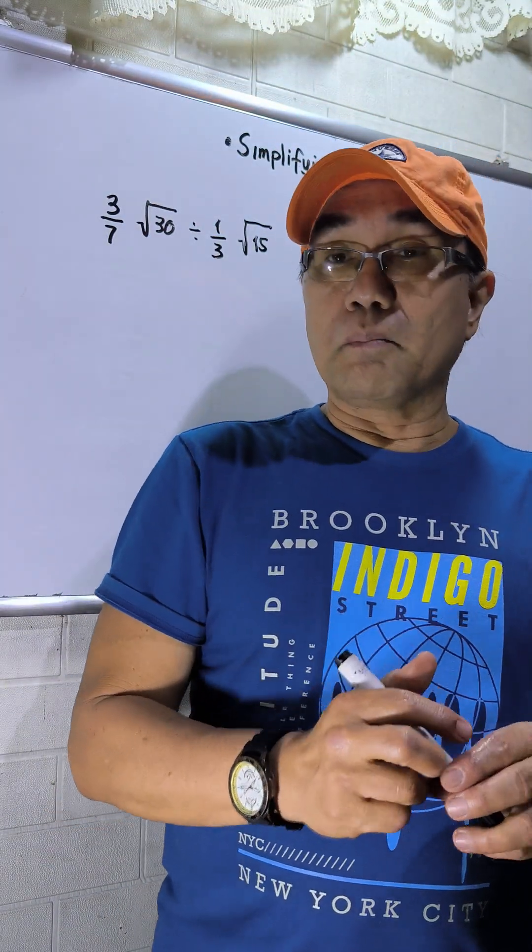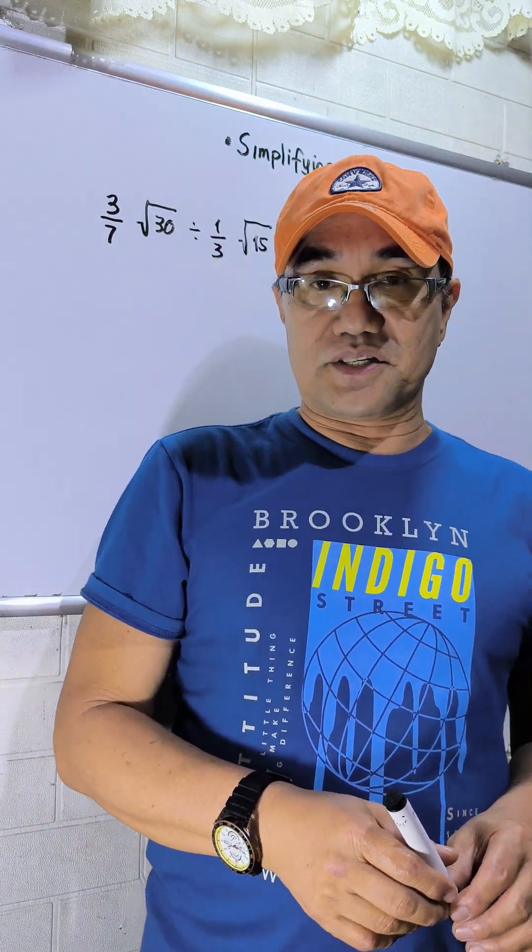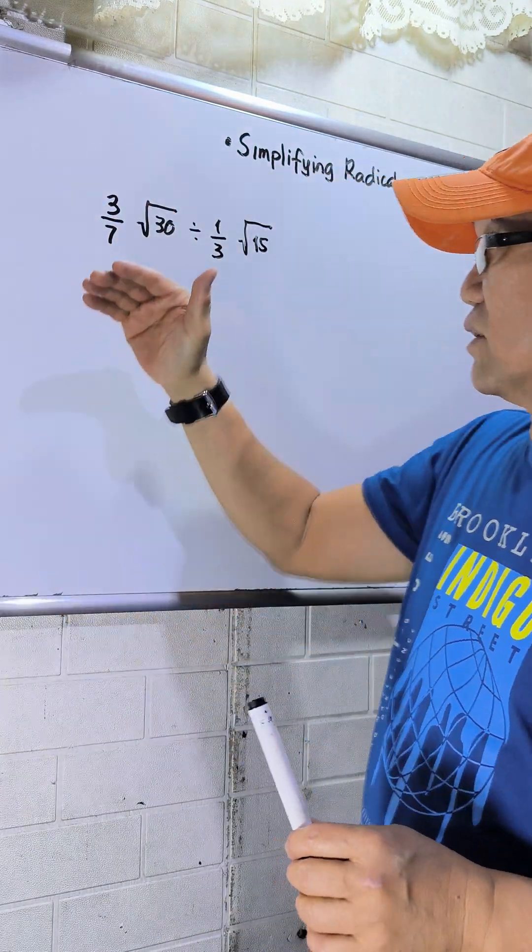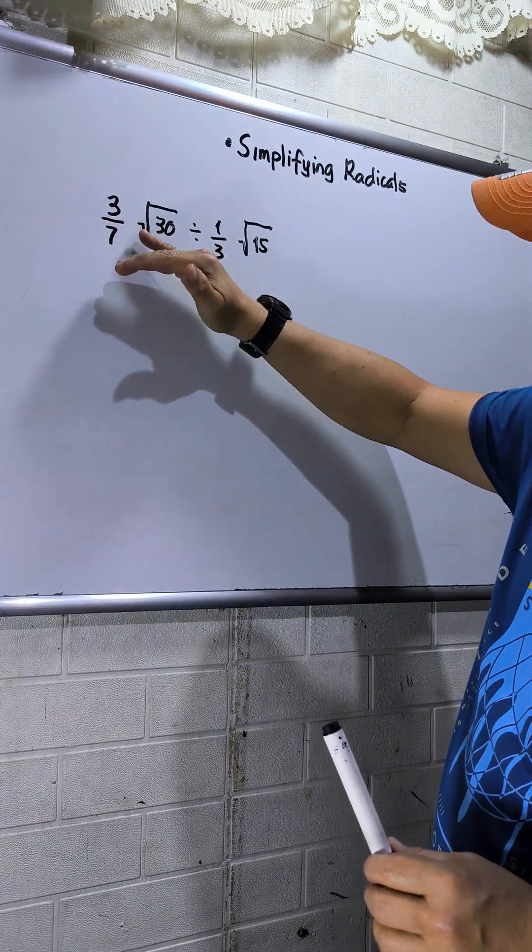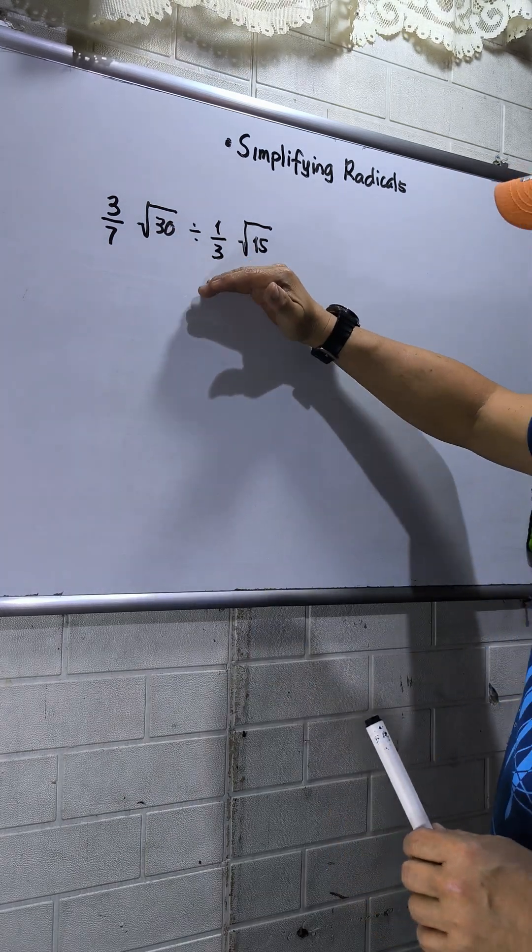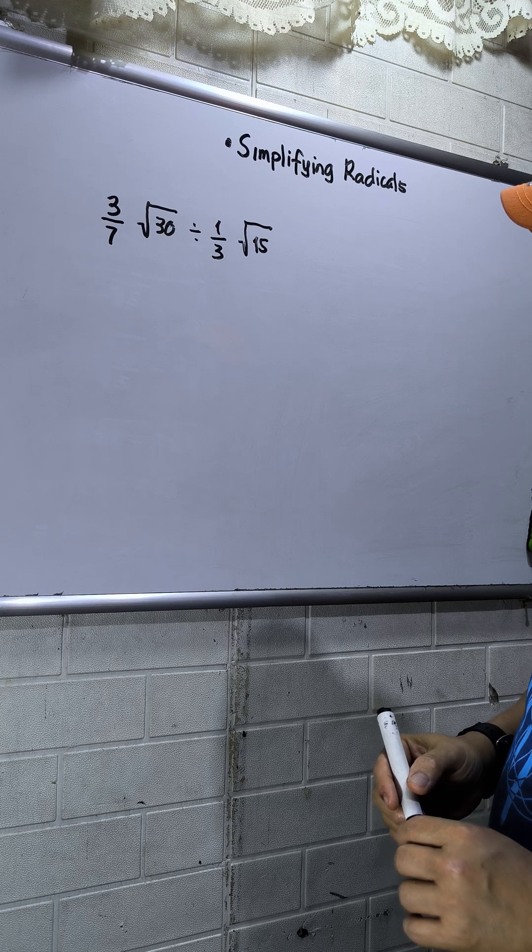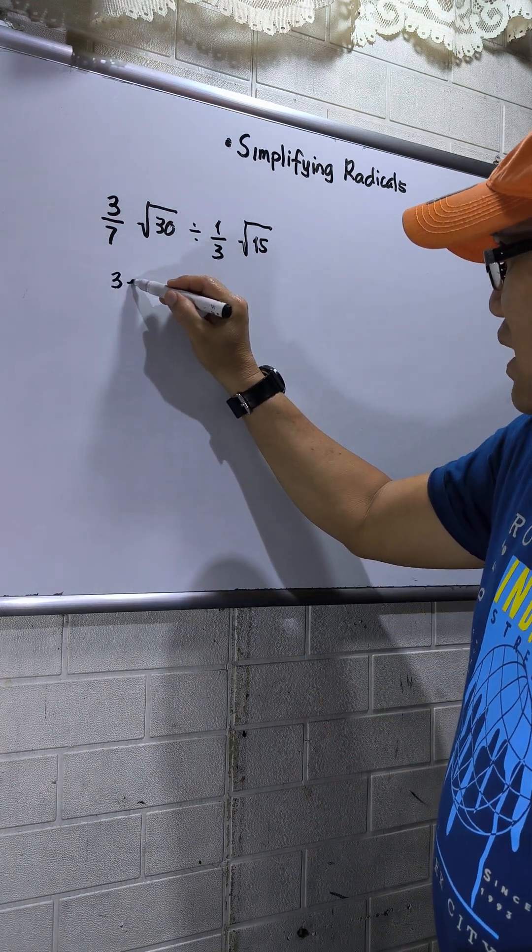Hello to everyone, my topic today is about simplifying the radicals. So I have here, I will explain in detail. I have 3 over 7 times square root of 30 divided by 1 third times square root of 15. I can write this one as 3 square root of 30 over 7.